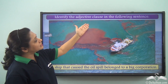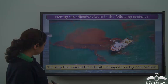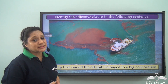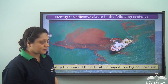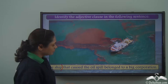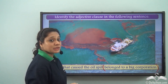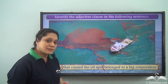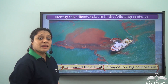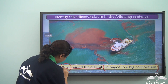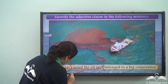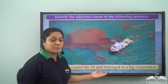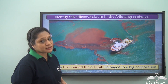Can you identify the adjective clause in the following sentence? 'The ship that caused the oil spill belonged to a big corporation.' Let us first identify the main clause: 'The ship belonged to a big corporation' makes complete sense and can stand alone, so that is the main clause. 'That caused the oil spill' is the dependent clause starting with the relative pronoun 'that.' This clause is describing the noun 'ship,' so 'that caused the oil spill' is the dependent adjective clause in this sentence.